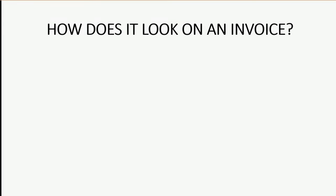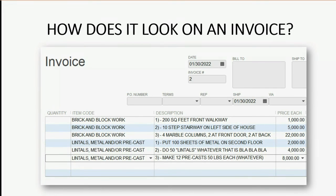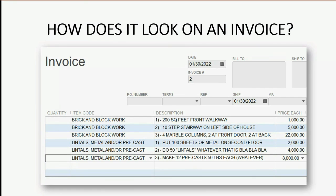How does it look on an invoice? You would take the name of the item as the item code, and the specific thing that you will do for that job goes in the description field. Notice you could have the same item listed several times but with a different description, so that you know for these two 'brick and block work' items, these are the two things that are going to be done. For the three items — lintels, metal, and precast — these are the three specific things that are going to be done. That's how someone billing the client would know to look at the work done, look at the description field, and then determine how much to bill the client.